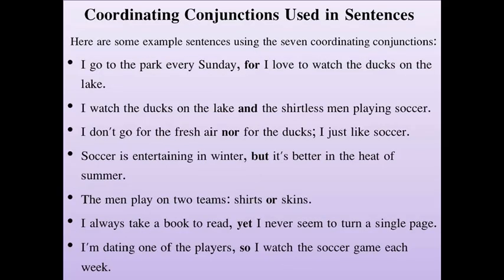These are the seven types of coordinating conjunctions. Let's look at examples of how we can use them. First: 'I go to the park every Sunday for I love to watch the ducks on the lake' — 'for' is used here to give the reason. Then: 'I watch the ducks on the lake and the shirtless men playing soccer' — 'and' adds to the sentence. For 'nor': 'I don't go for the fresh air nor for the ducks.' These examples show different usages.